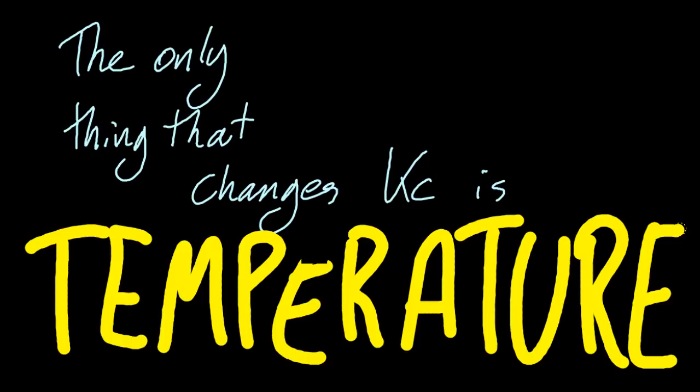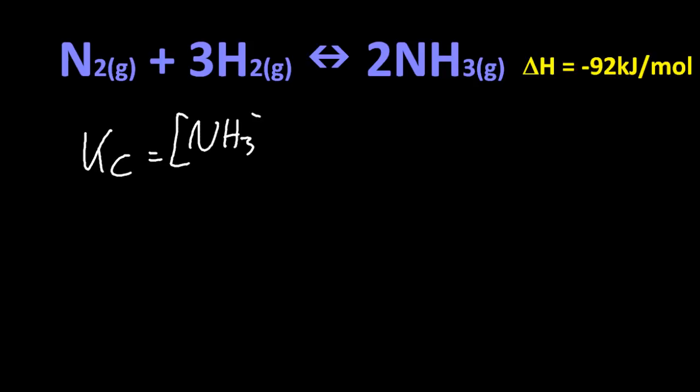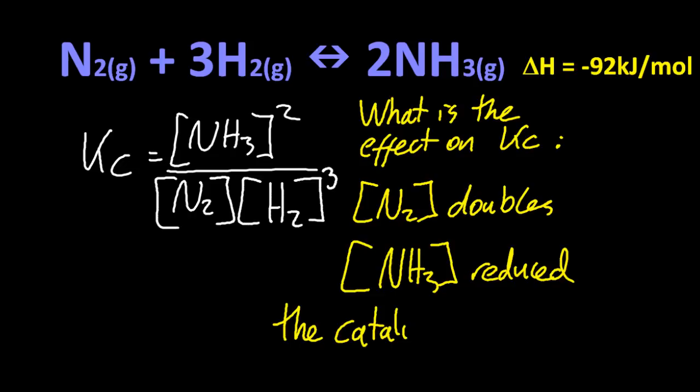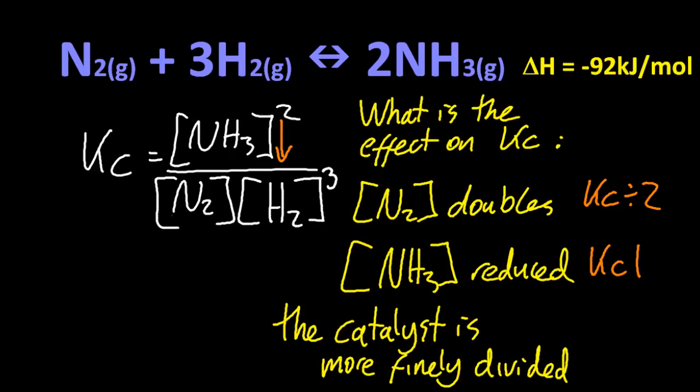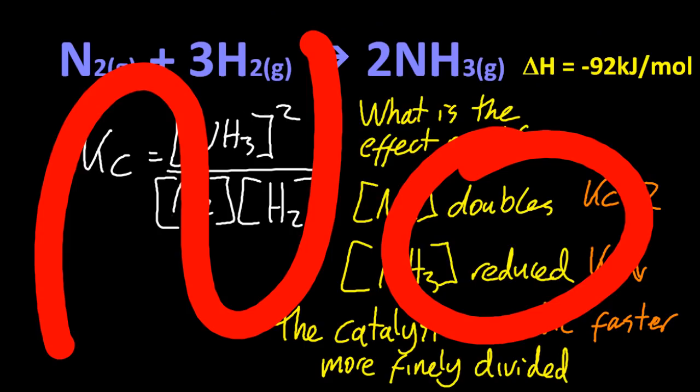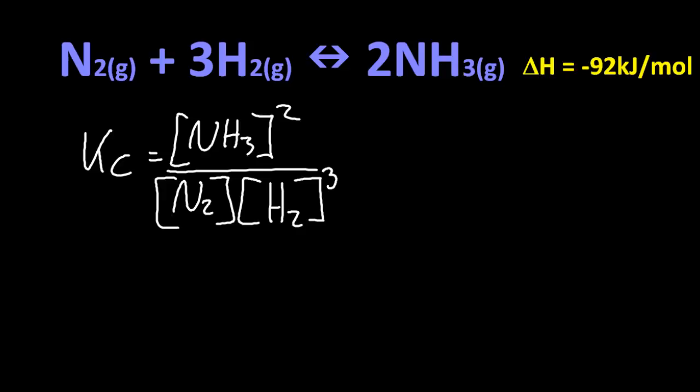Here's the Haber process. I'll write out Kc for you. The coefficients become the exponents. And here's some questions. So what is the effect on Kc if I double the nitrogen concentration? If I reduce ammonia? And the third question, if the catalyst is more finely divided? Well, looking at Kc, if I double N₂, Kc's going to be halved. Remove ammonia, Kc's going down. And Kc's going to be faster. No, no, no, no, no. This is all wrong. The only thing that changes Kc is temperature. But year after year, people get this wrong. None of those things change Kc at all. It's just temperature.